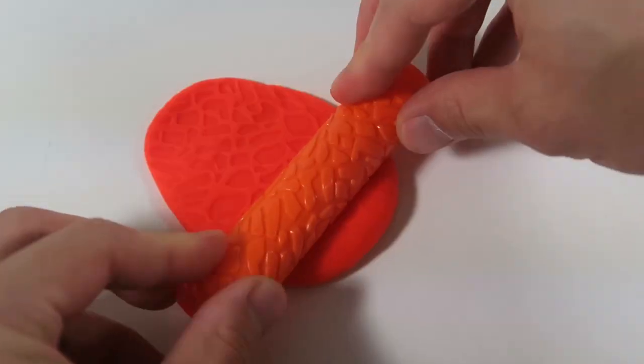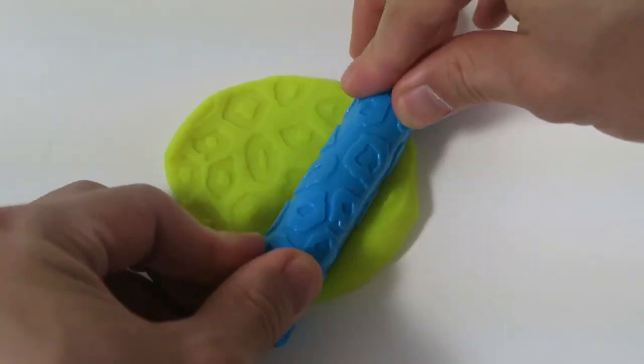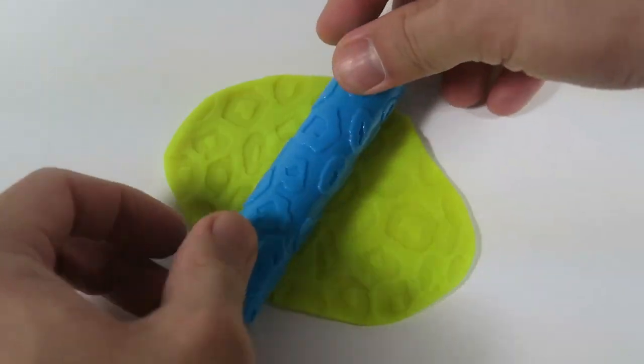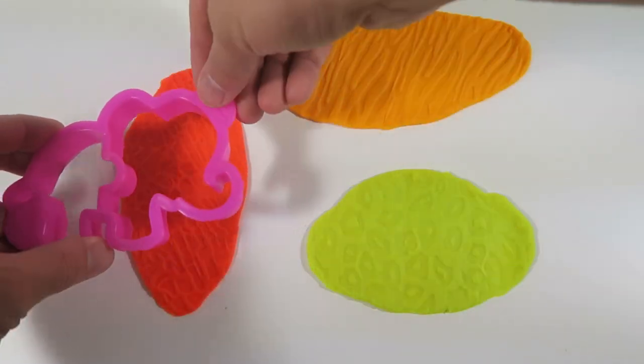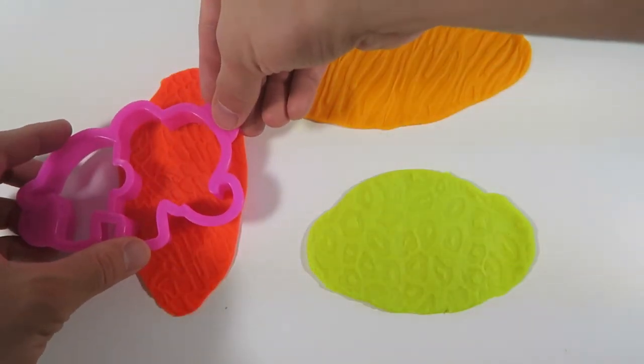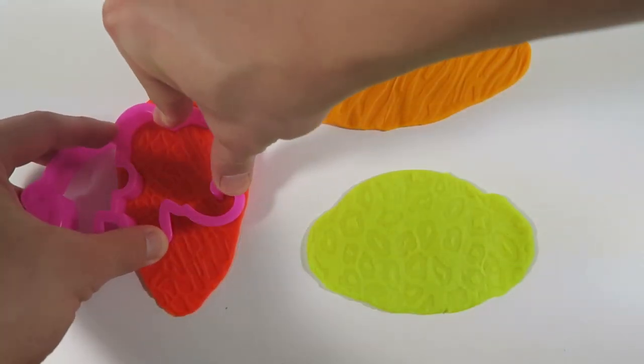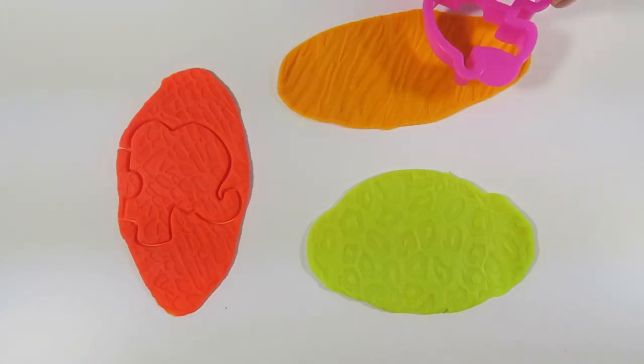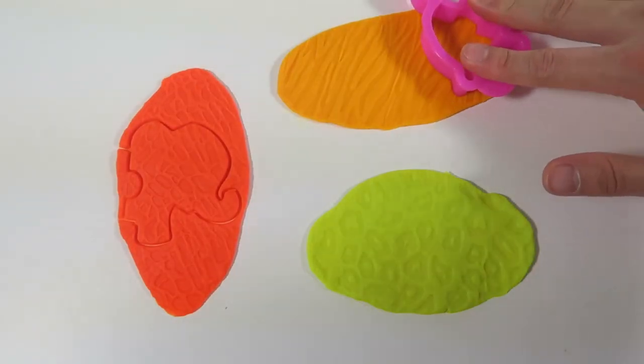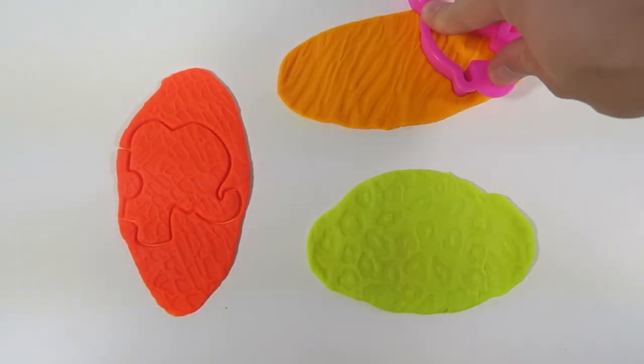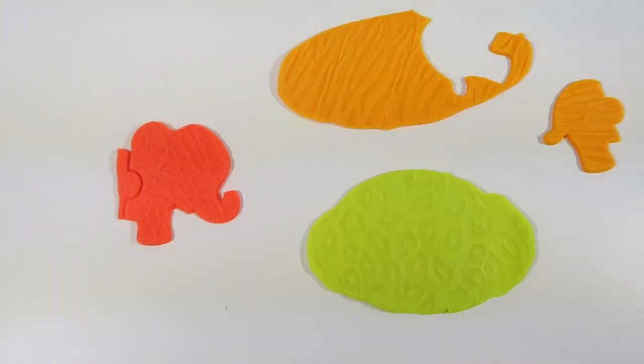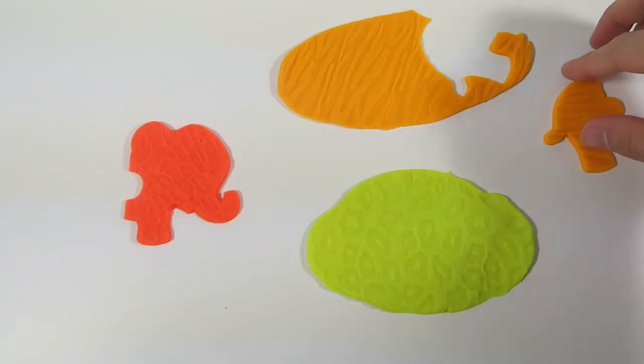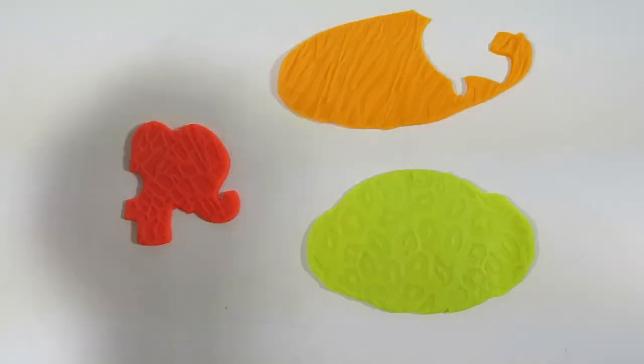Since we used all the Play-Doh, let's roll out some more. Now I'm going to do the elephant. My favorite animal is the elephant. What's yours? Tell me in the comments below. Remove the excess Play-Doh, put the pieces together. Cool.